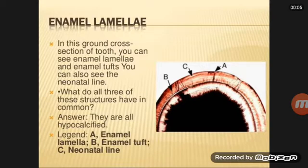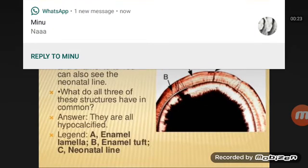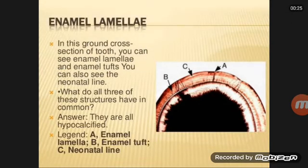This is enamel lamella. You can see here enamel lamella number A, enamel lamella number B. The part is enamel top and C. C is neural lines. Now we will discuss about the hypocalcified areas of enamel.